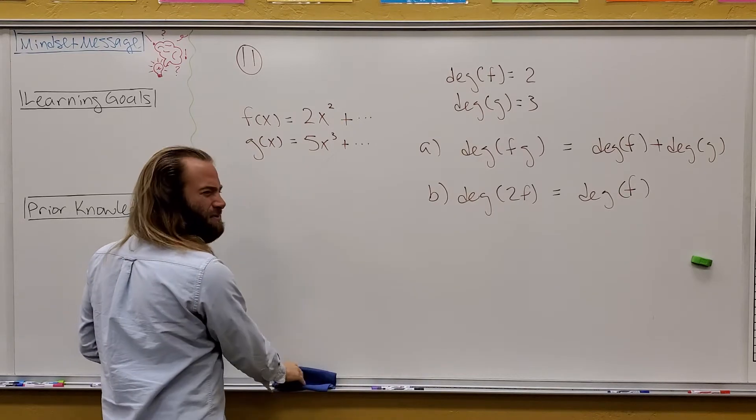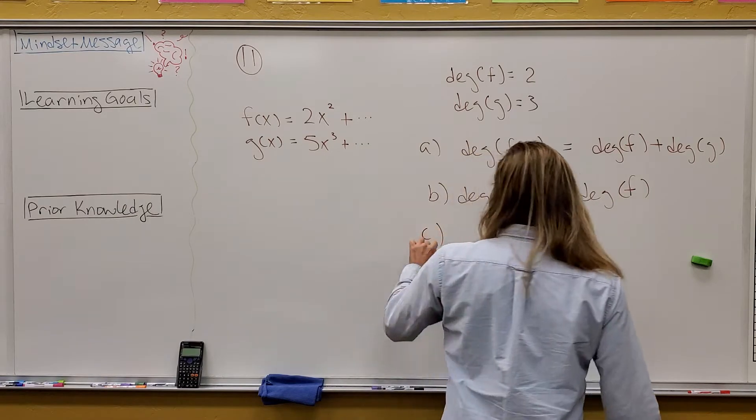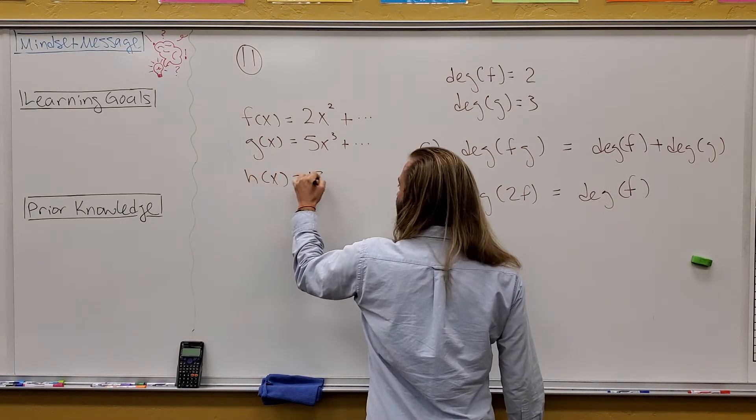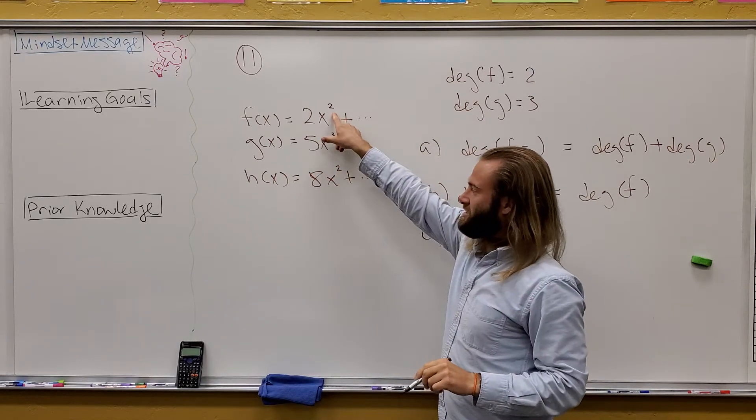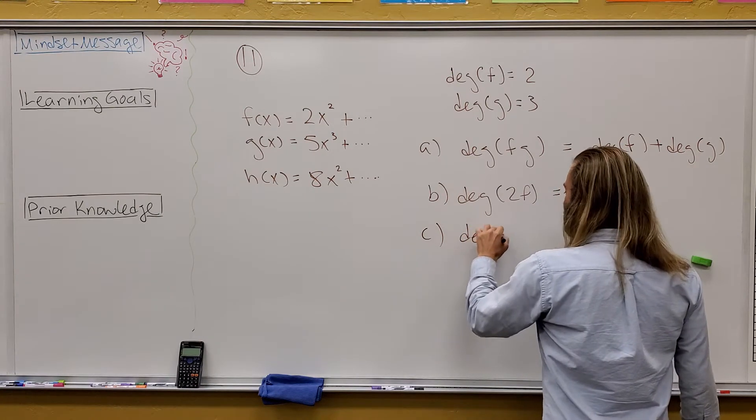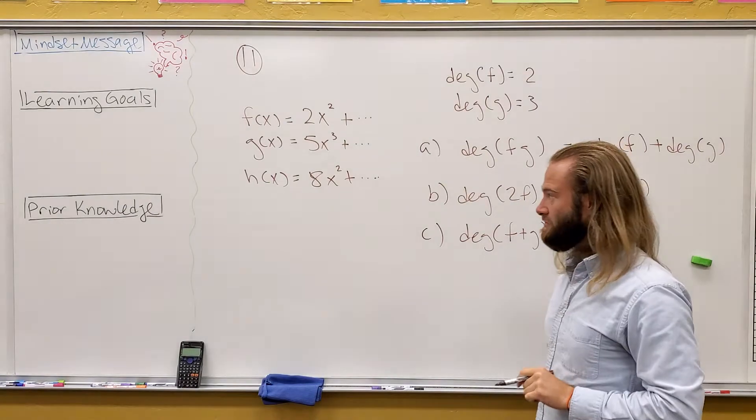And then the last one is maybe trickier than the other ones. That's just because we might want a third one, H of X, and let's say, I don't know, 8X squared plus blah, blah, blah. Now, I made this so that it has the same degree as F on purpose, because this one's asking us what's going on when we take Deg F plus G.